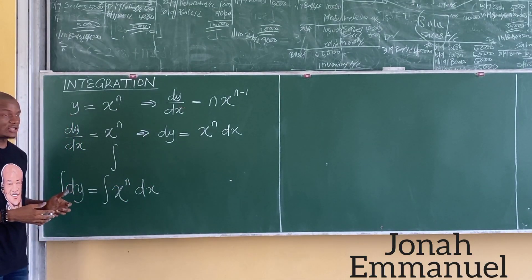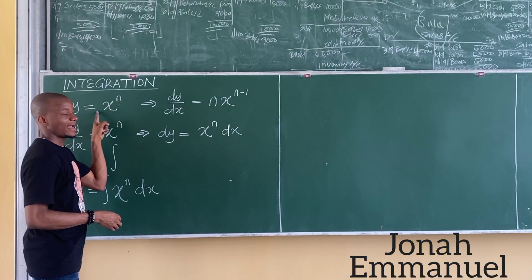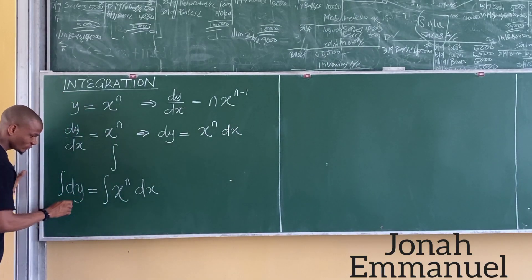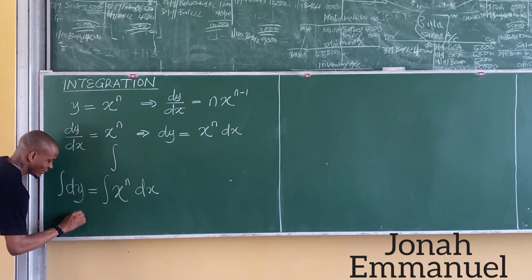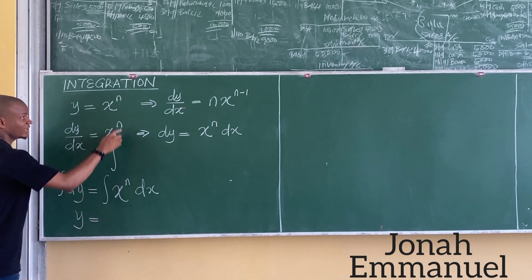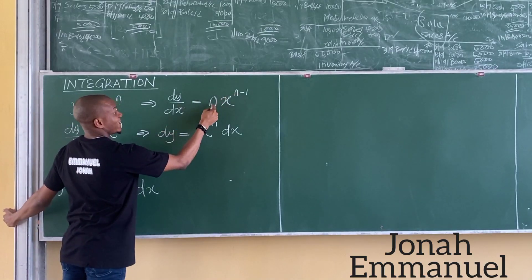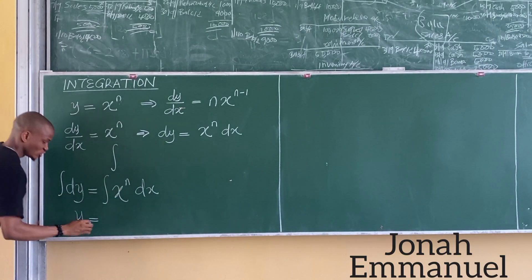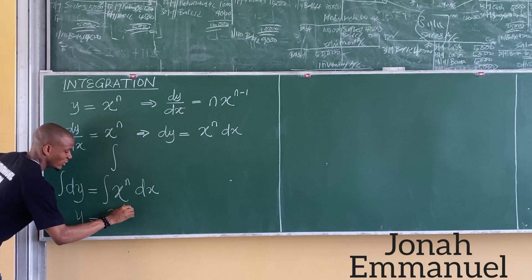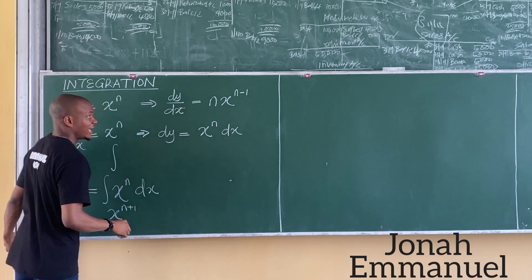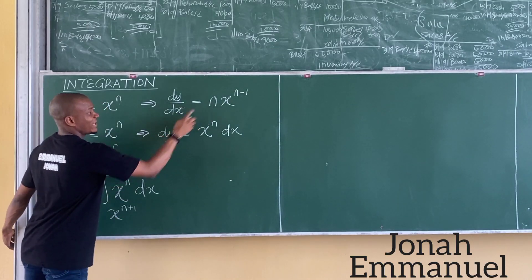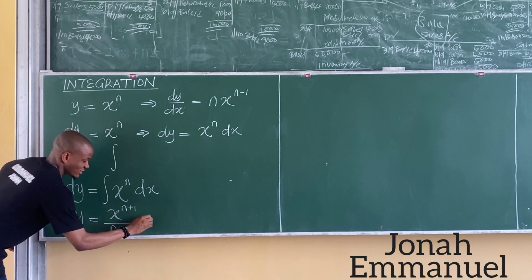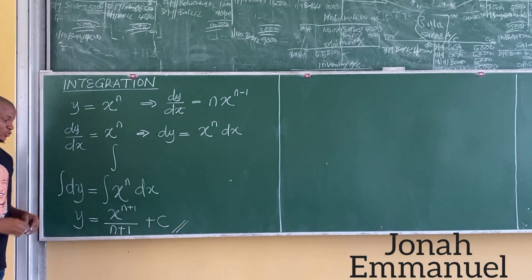If you observe the process of differentiation, it was simply to multiply by the power and then subtract 1. For integration, I will do the exact opposite. To integrate, instead of subtracting 1, I will add 1, so it becomes x to the power n plus 1. And as opposed to multiplying by the power, I will divide by the new power n plus 1, and of course add a constant. This is how we do integration.